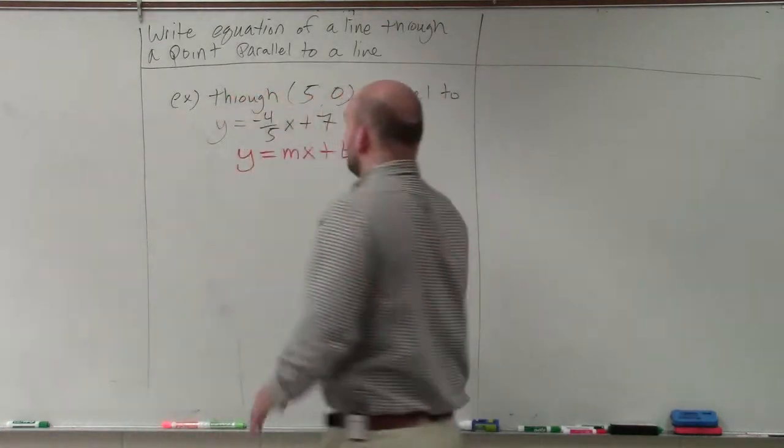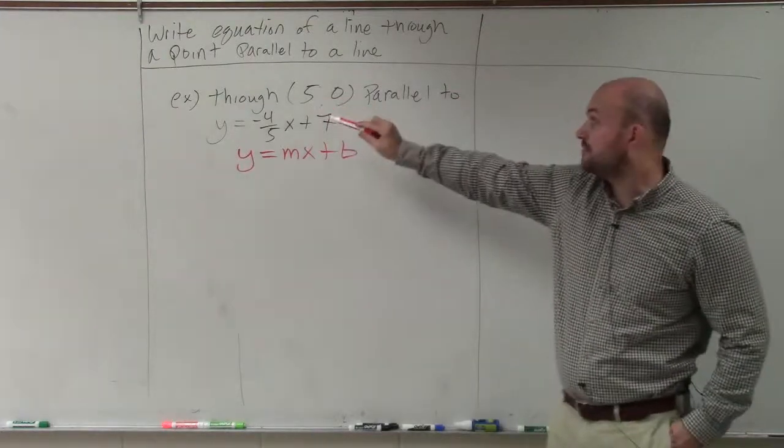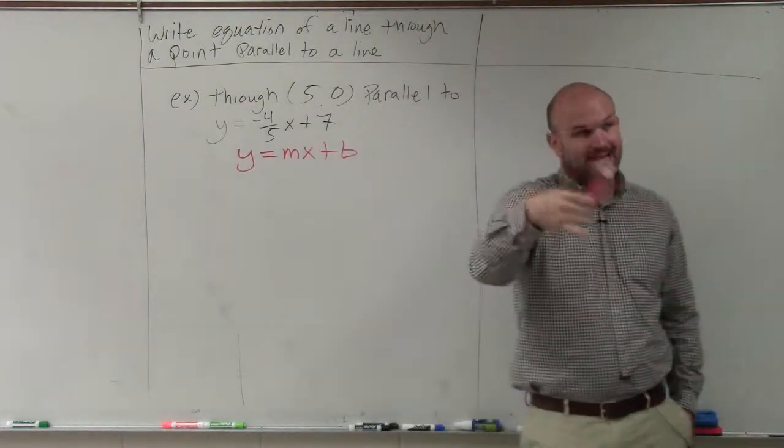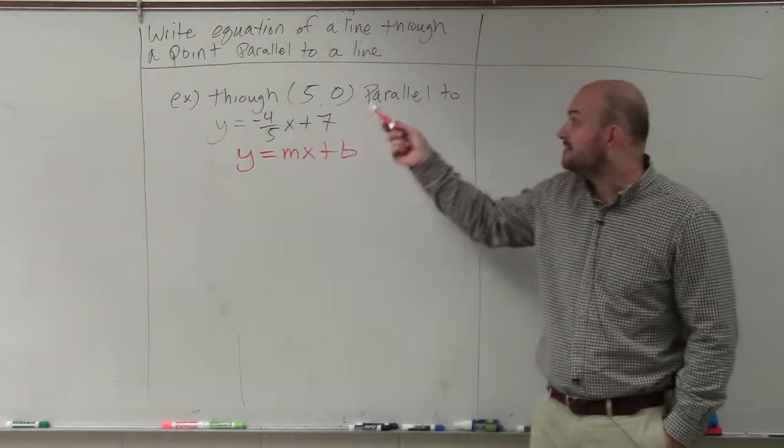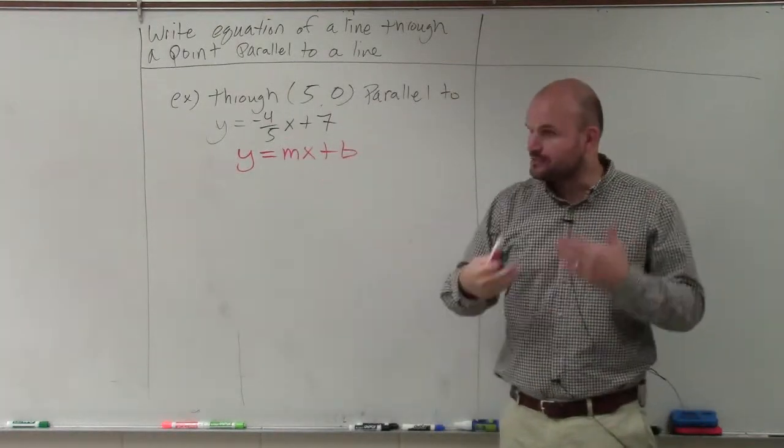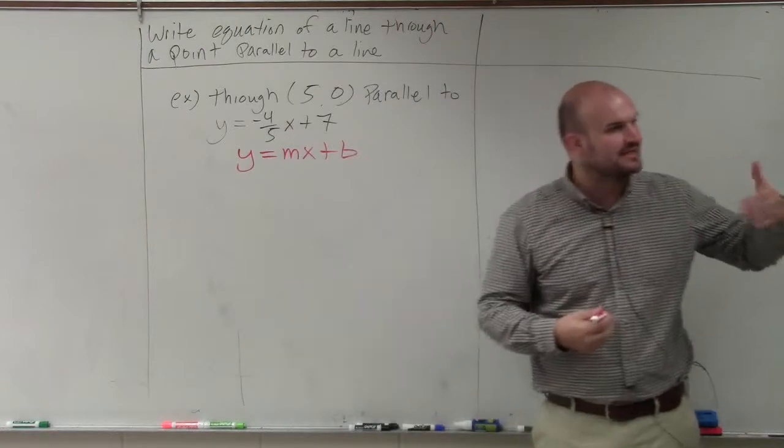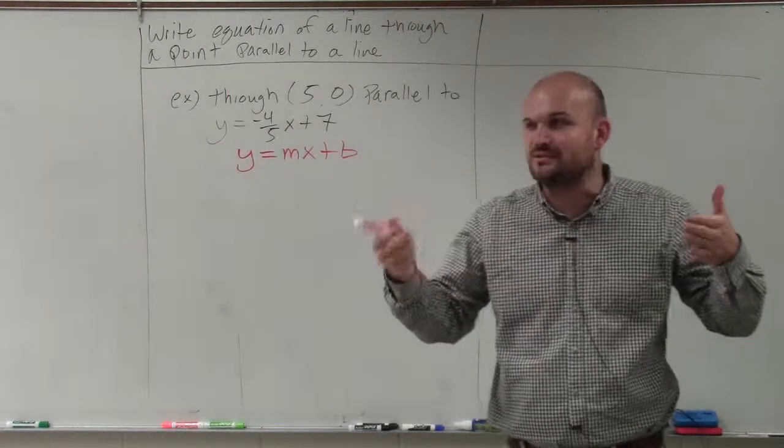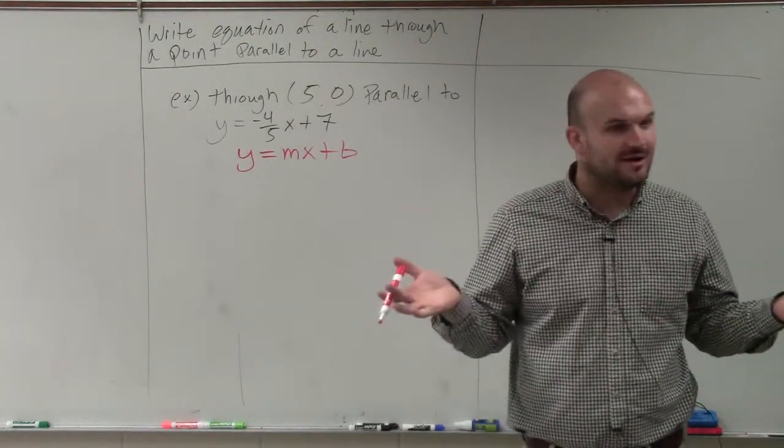In this example, we have a point that the line goes through. But rather than just giving us the slope, they're saying it has to be parallel to another line. So we have to remember what exactly parallel lines represent. Does anybody want to offer up a suggestion?